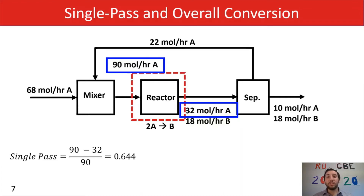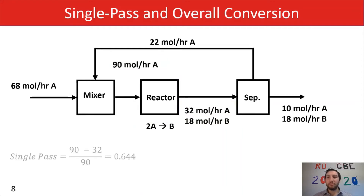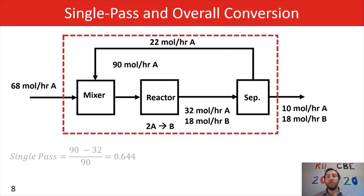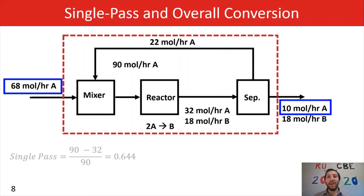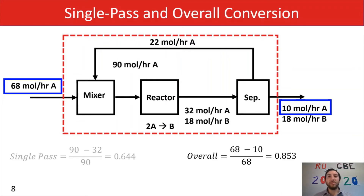Now switching to overall conversion, we reset our system and draw an envelope around the entire system — similar to a total material balance. Remember, when you have a total material balance, your recycle stream does not count as part of the system; your envelope captures that recycle stream because none of the fluid is entering or exiting the system. So we have 68 moles per hour of A entering the entire system, and exiting the entire system we have 10 moles per hour of A. For overall conversion: 68 minus 10 divided by 68, giving us an overall conversion of 85.3%.